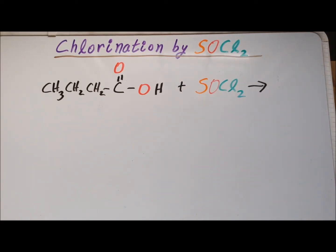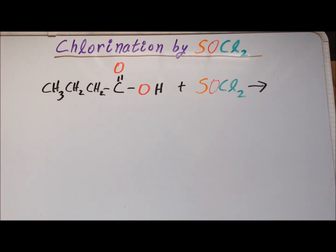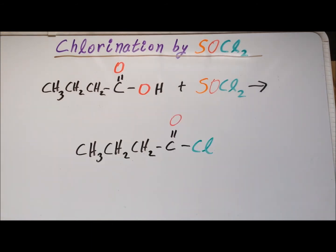Our final reaction involves butyric acid, heated gently with thionyl chloride. The major organic product is called butyryl chloride. Please see the following figures showing the computed structures of reactants, products, and the structures of the two transition states.